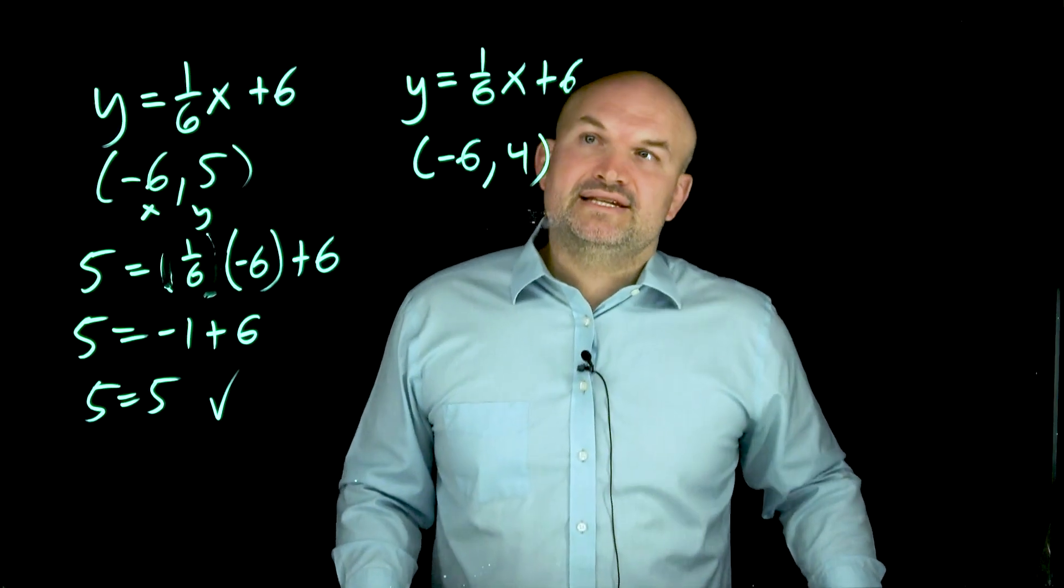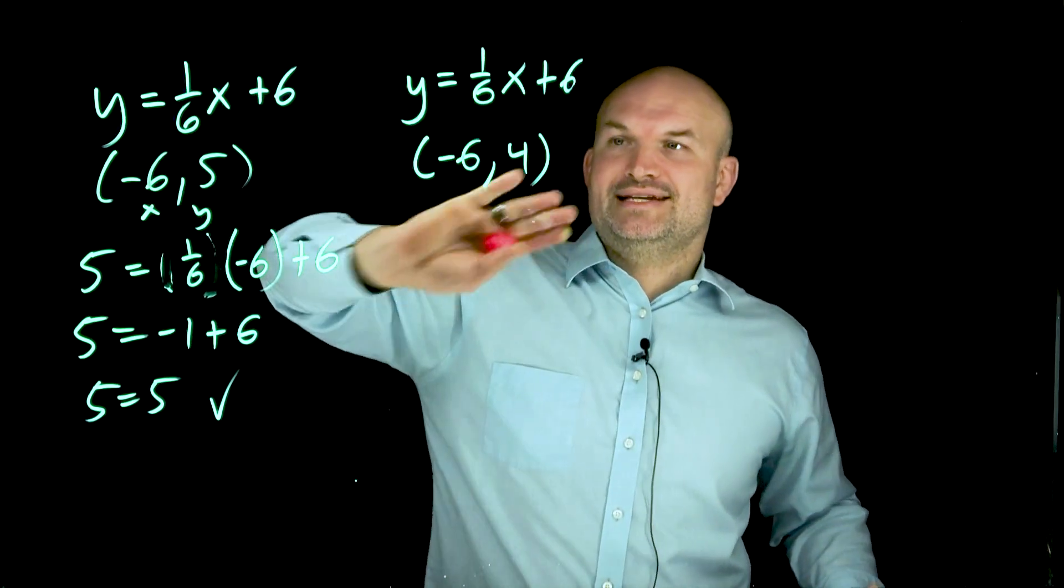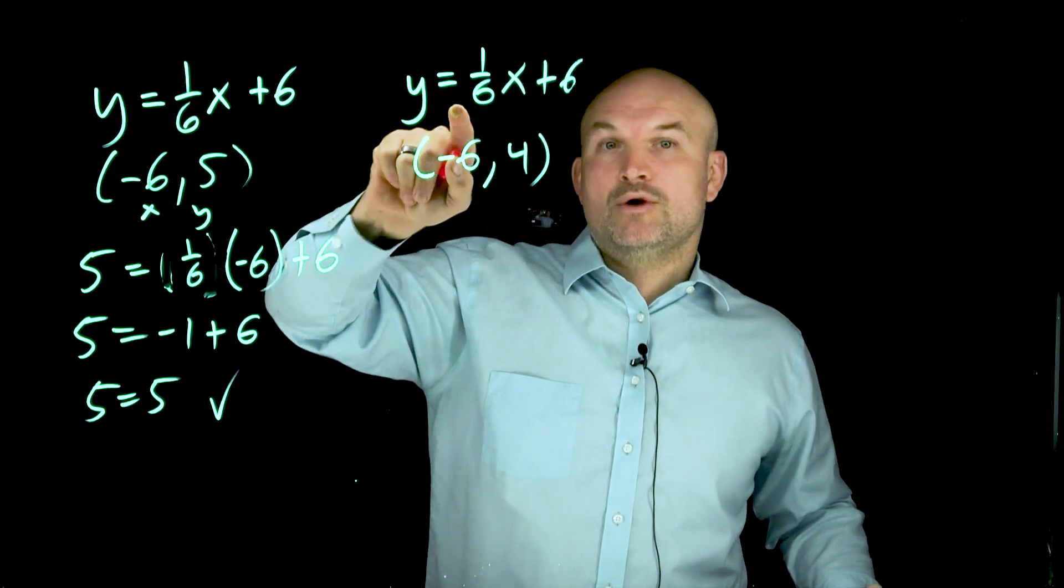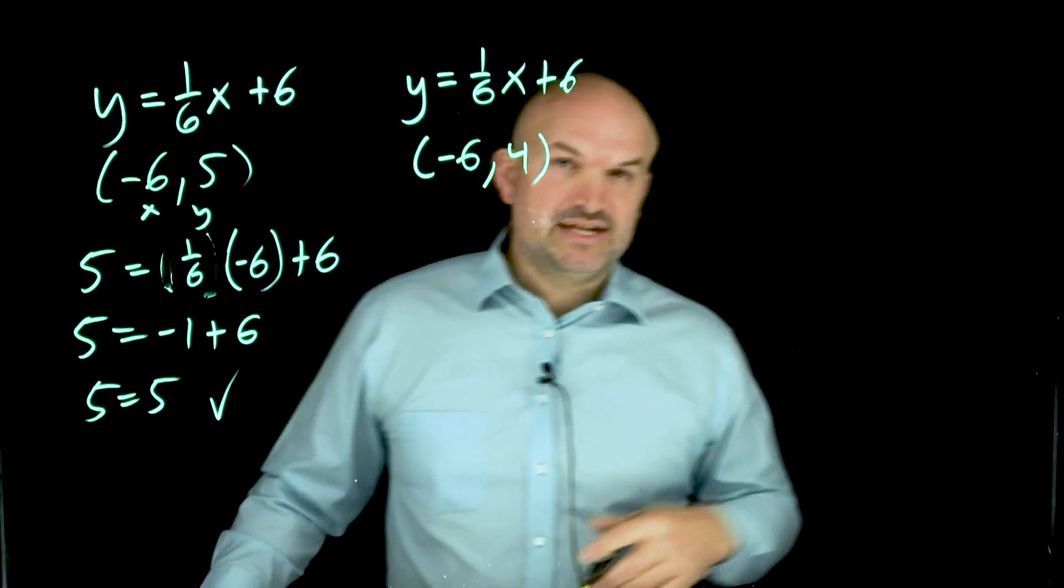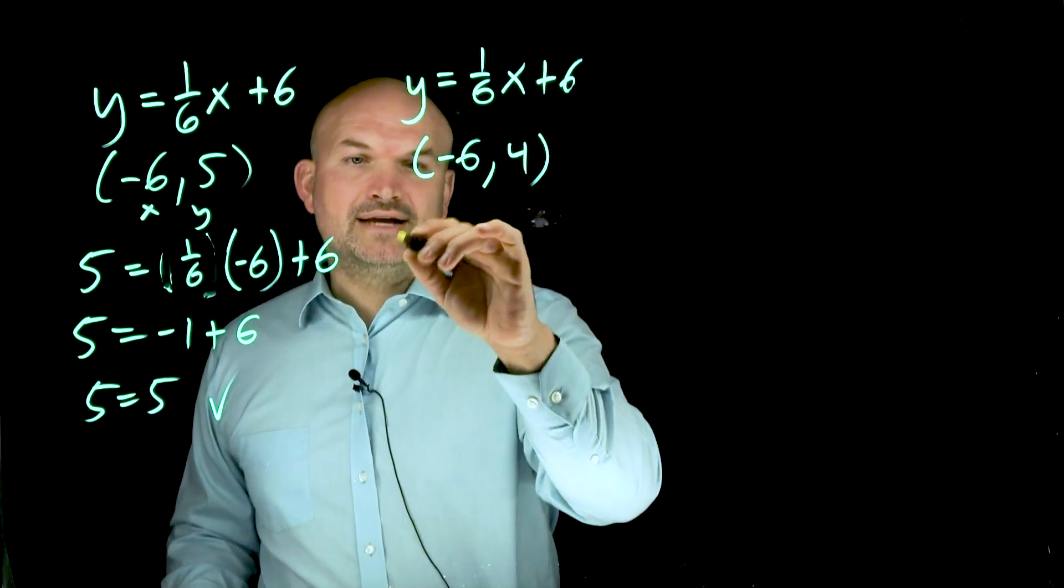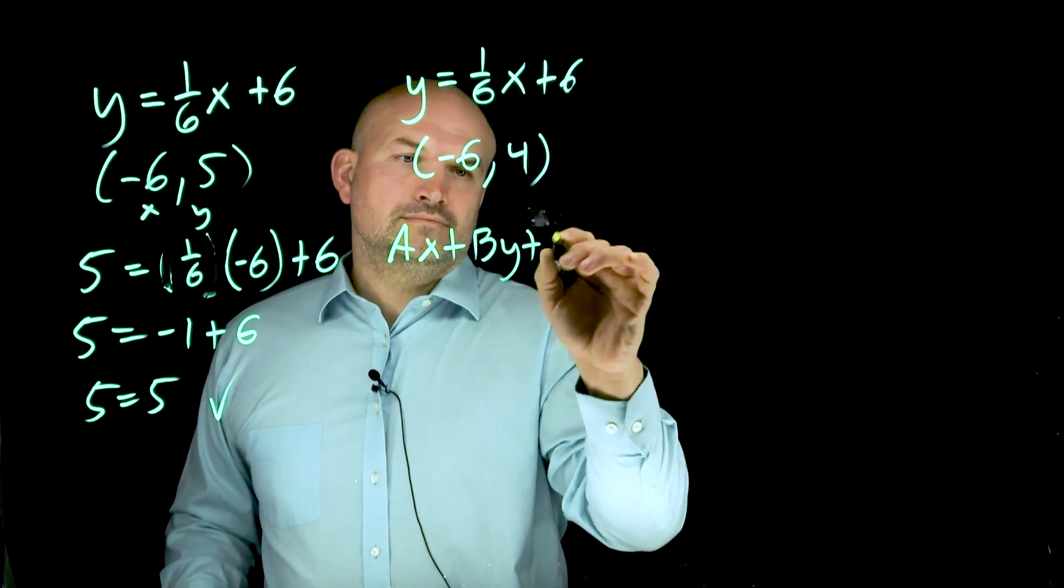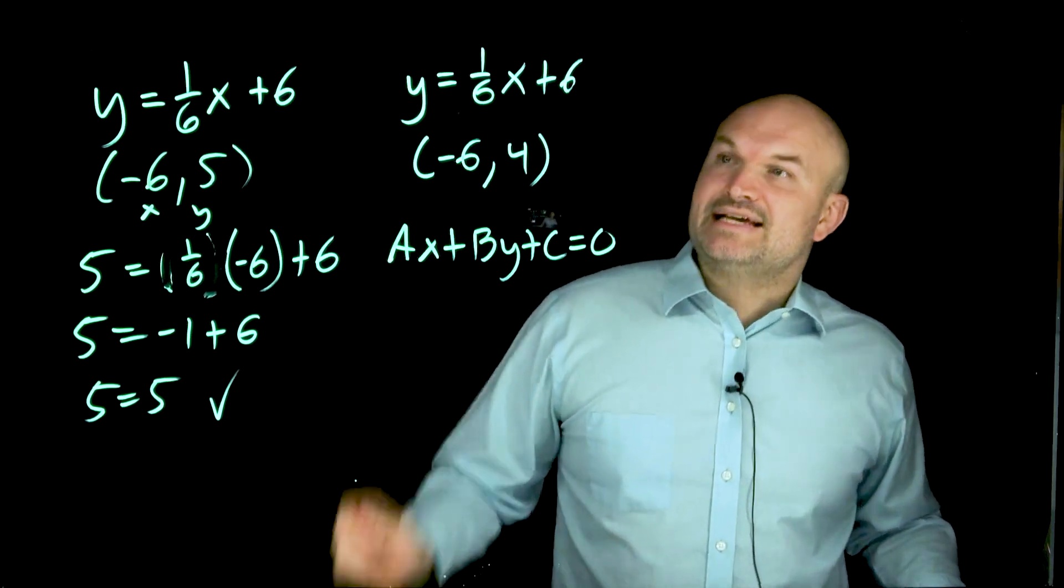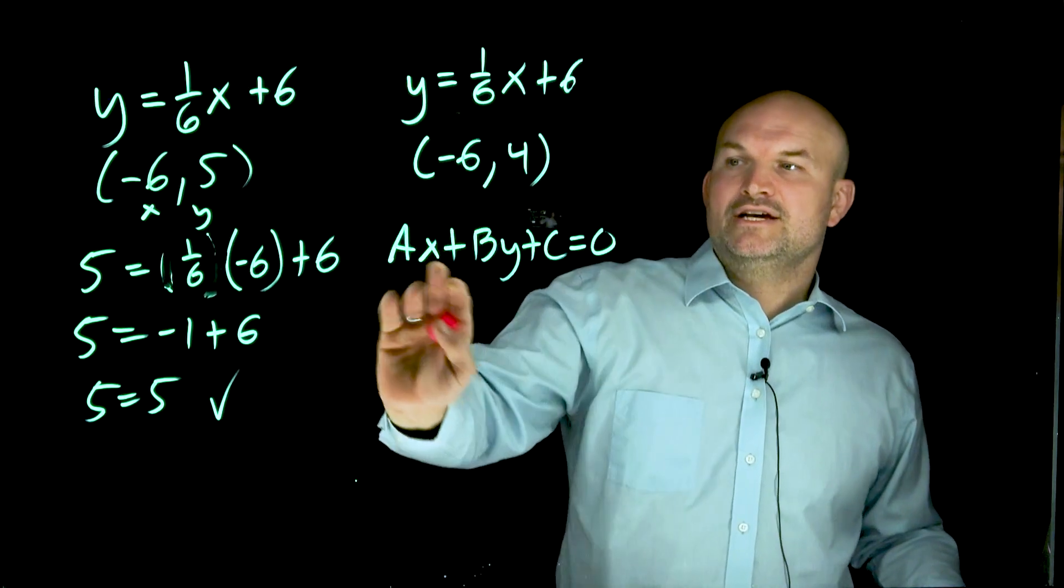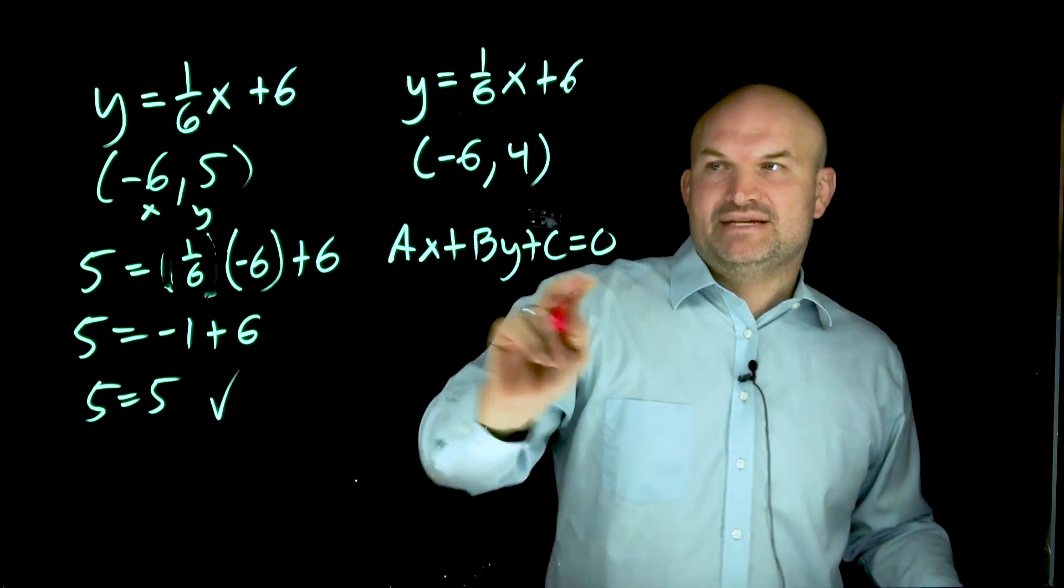Now, the important thing is when we're trying to identify the distance from an equation to a point, we don't want to use our slope-intercept form. What we're going to want to use is the standard form of the line. So I simply need to get all these values over to the same side to identify my A, B, and my C.